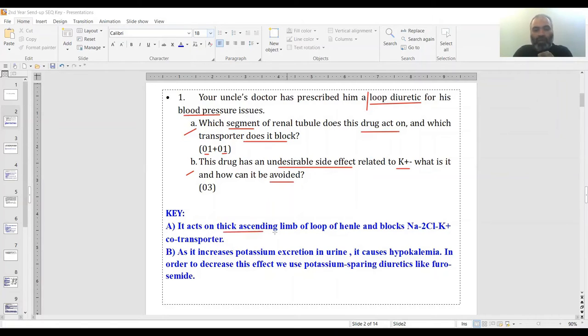The answer key states the thick ascending limb of loop of Henle is the segment, and the sodium-2-chloride-potassium co-transporter is the transporter which loop diuretics block.